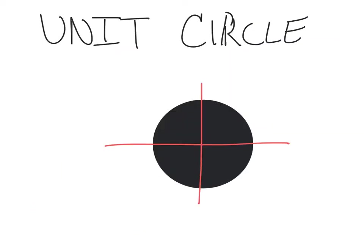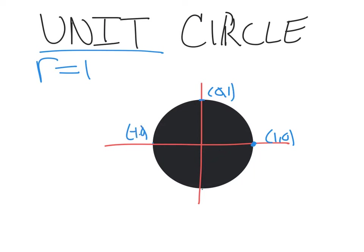Let's get into labeling some things on the unit circle. When we say unit, we're talking about a radius equal to 1. So every point should be 1 away from the origin. We can label these points: that's (1, 0), (0, 1), (-1, 0), and (0, -1).